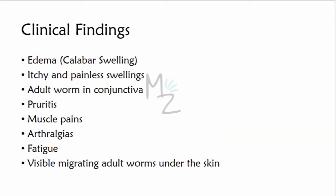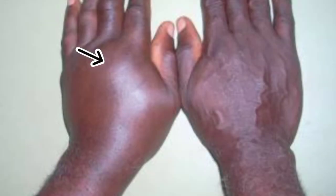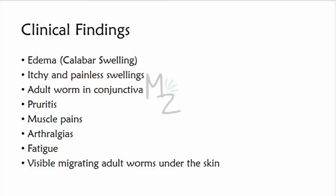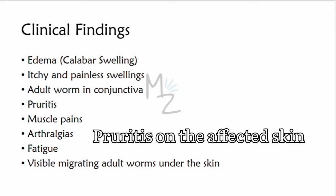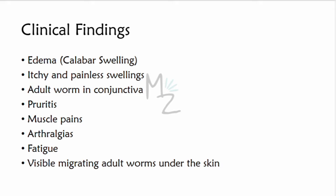Clinical findings include edema — also called Calabar swelling — which is itchy but painless swelling. Adult worms present in the conjunctiva can cause pruritus, pain, and eventually blindness. Other symptoms include pruritus all over the body, muscle pains, arthralgias, fatigue, and visible migrating adult worms under the skin.